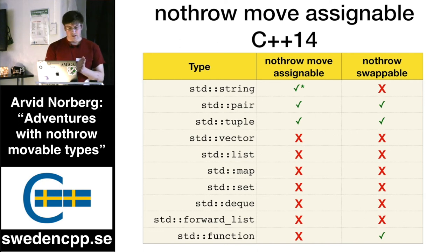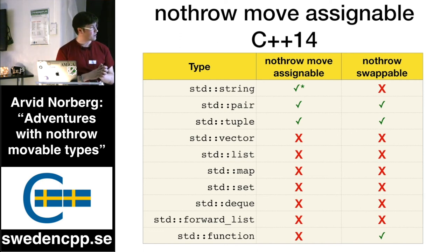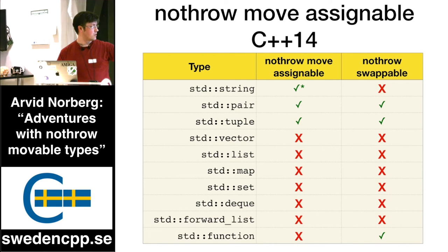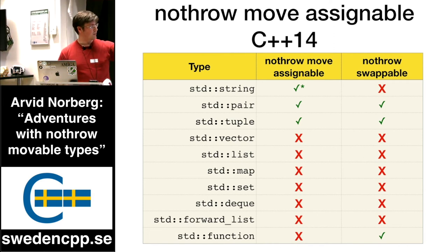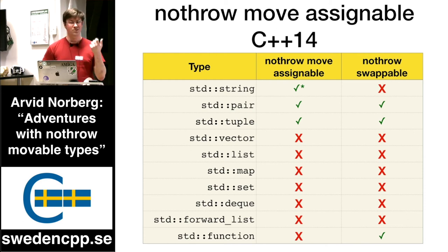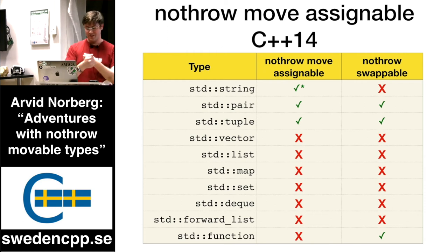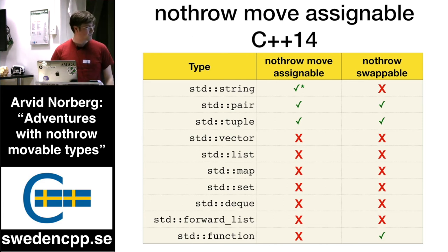I think it's an oversight that the nothrow swappable column is all red, because even if you have the sentinel-node implementation of your node-based containers, you can still swap them — you already have all the sentinel nodes you need, you just need to change the pointers.